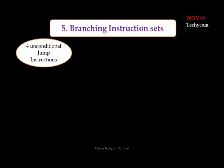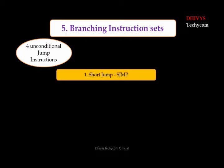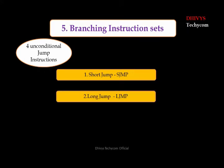First we will start with unconditional jump instructions. We have four unconditional jump instructions. The first is the short jump, which is an 8-bit instruction. We have a large program with many instruction sets and ALP — it can be a normal basic ALP or a higher-end application-oriented program. When we call SJMP, the next instruction's first byte is used. That is all about short jump.